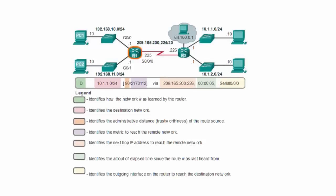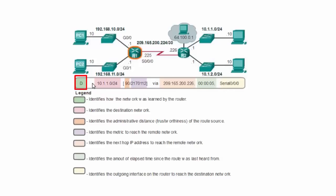To explain the routing table in more detail: the first column indicates how the network was learned. 'D' here indicates EIGRP, meaning the routing protocol EIGRP created this entry in the routing table. The destination network portion identifies the target network. The administrative distance indicates the trustworthiness of the entry — how trusted this source is. If it's coming from a trusted source, this number reflects how reliable that source is.